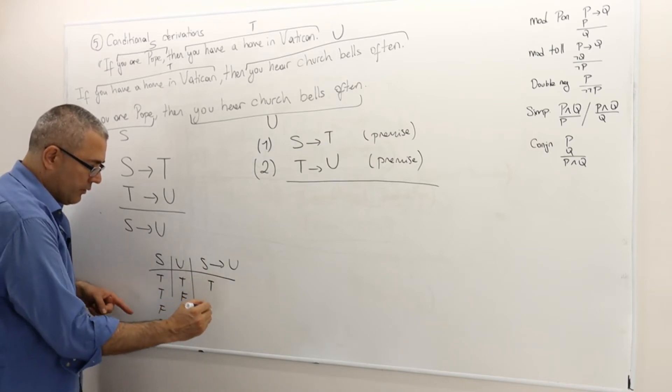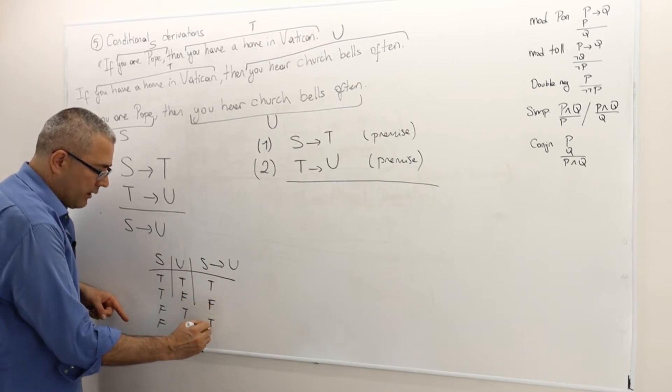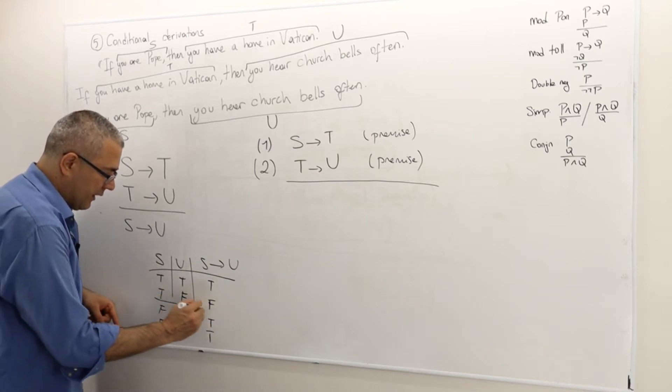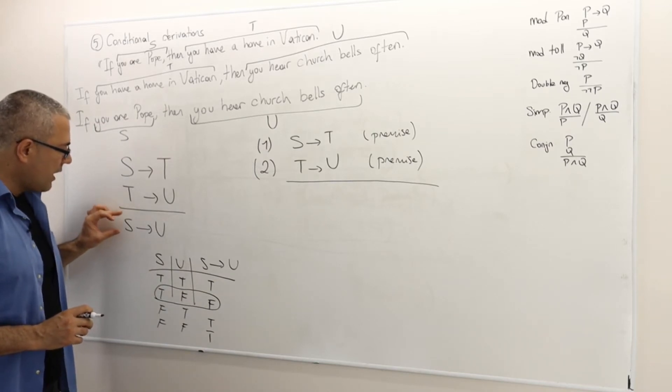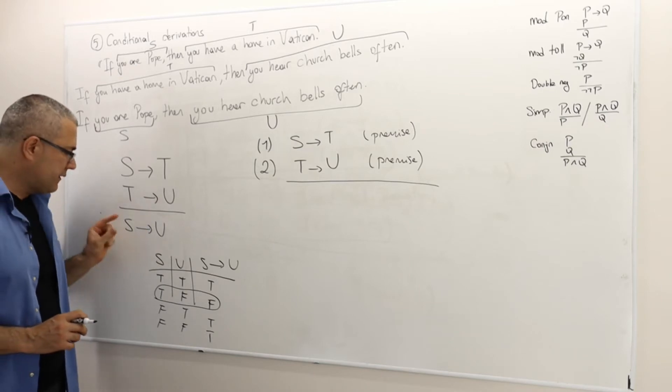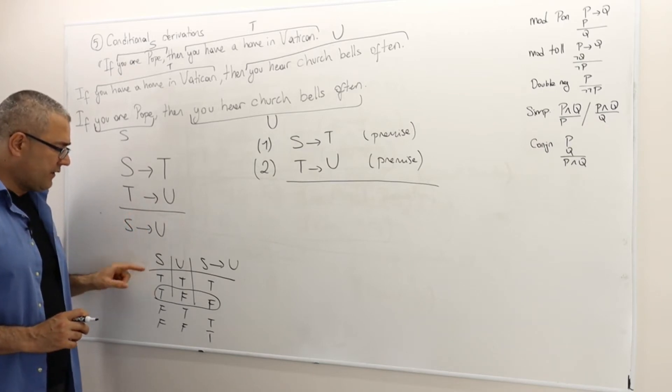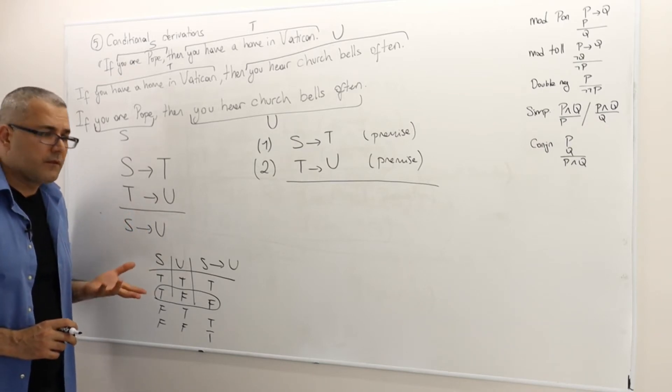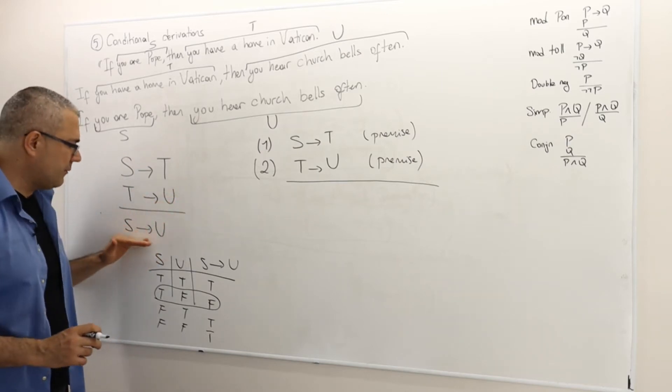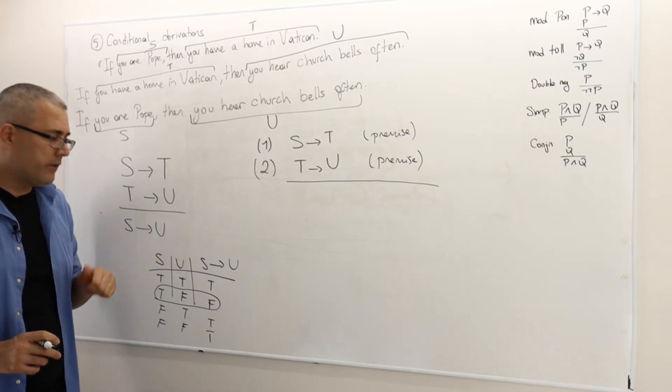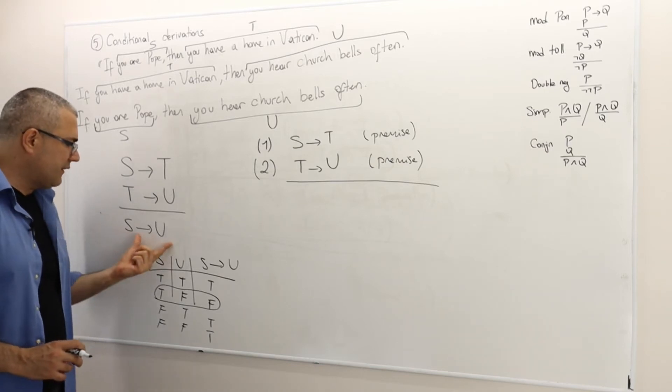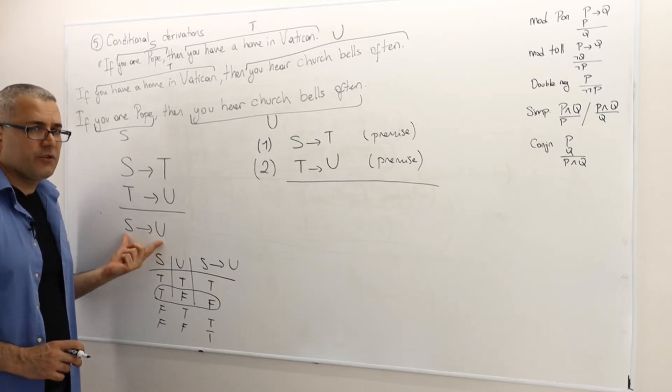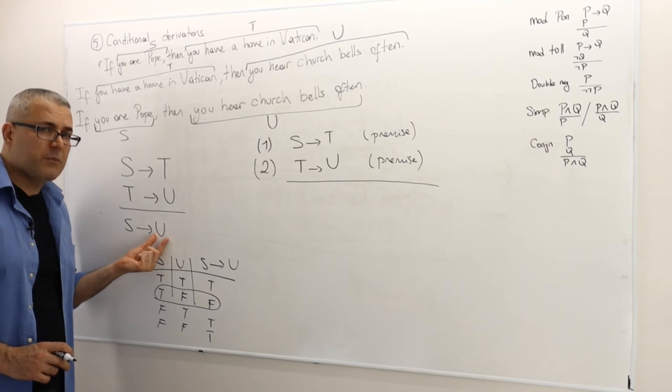If you remember S implies U is true everywhere except when S is true and U is false. So what does that mean? That means S implies U is a true statement as long as S is a false statement. If S is false then this implication is true.